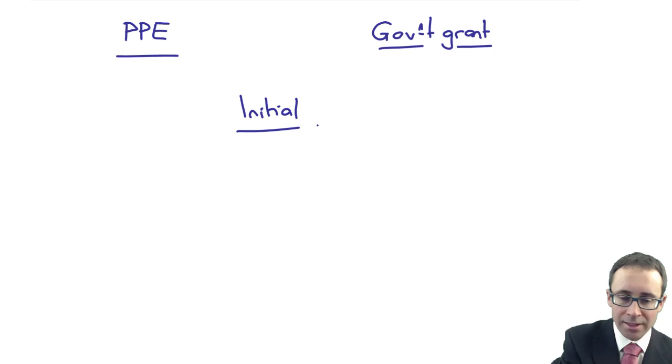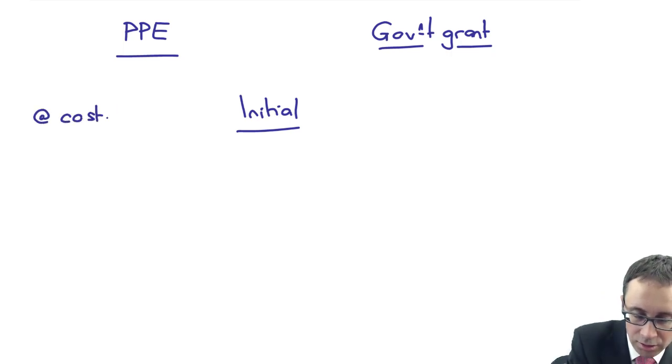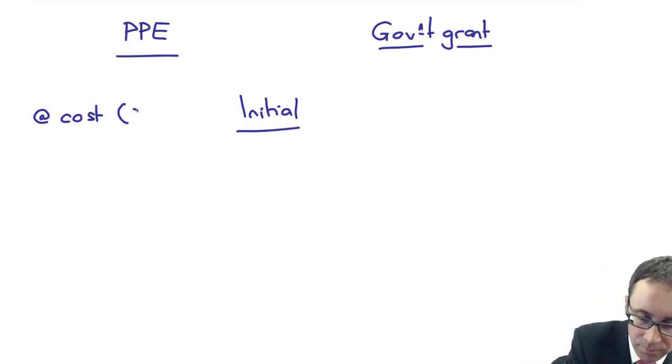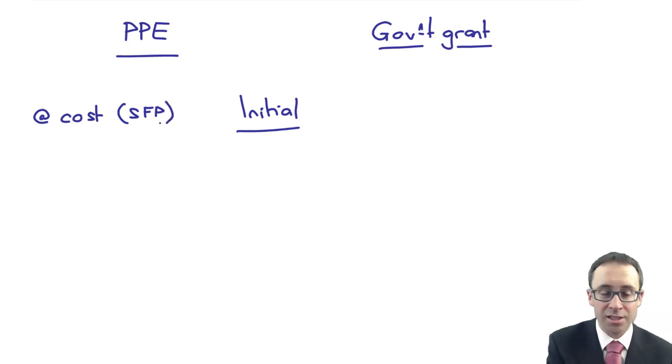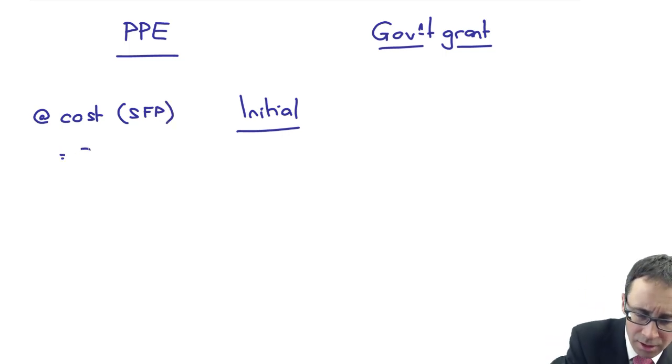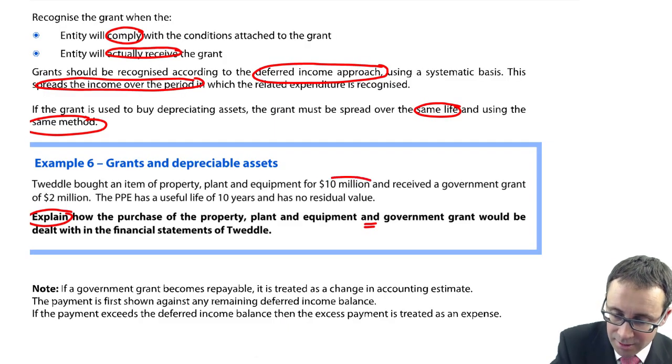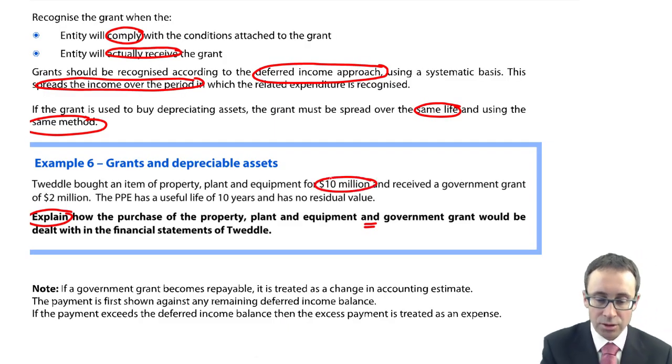at your initial recognition. So the property, plant and equipment, we recognise it initially at cost. Where do we show the cost in the statement of financial position? So explain to the examiner that you recognise it at cost in the statement of financial position. And the amount that we recognise there, was it at $10 million.